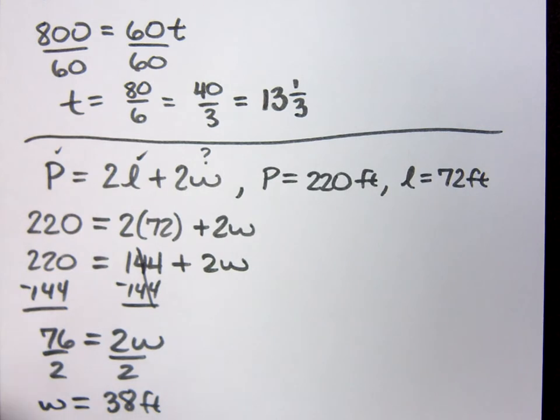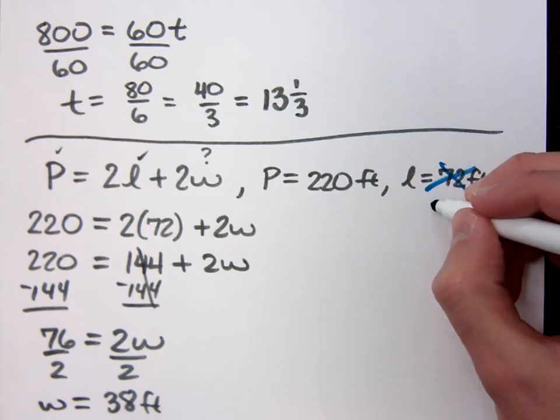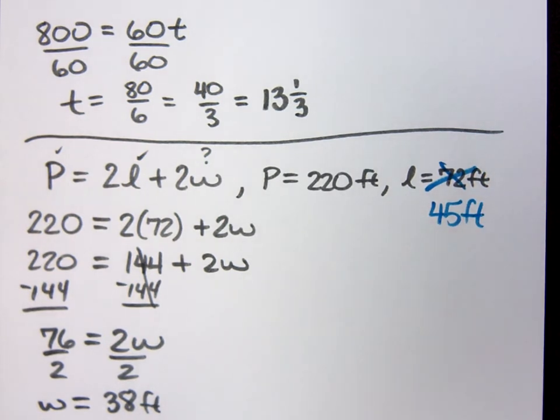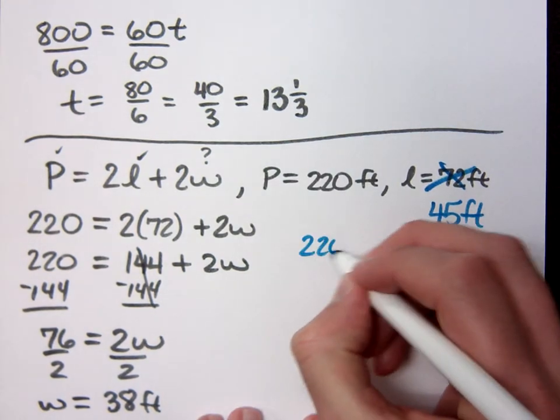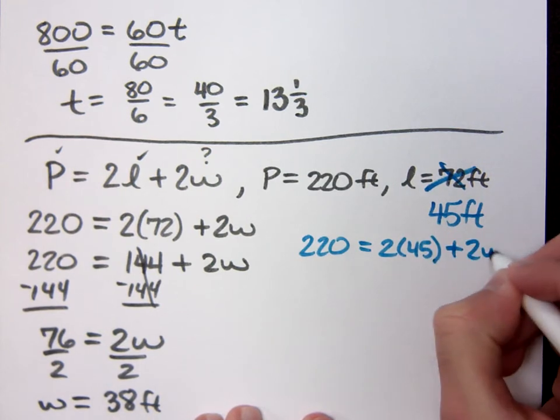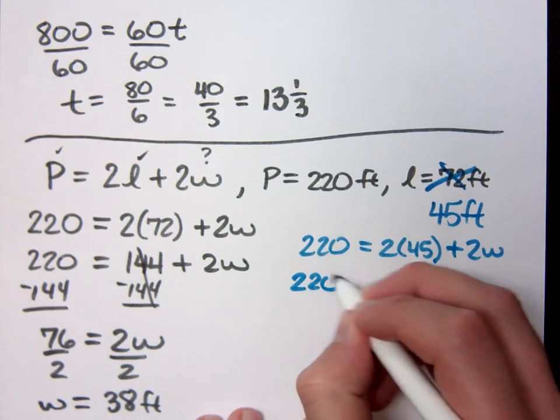But hold on a second then. Hey guys, I just came back and talked to my wife. She said 72 feet is too much. We've got to change that up. She doesn't matter. She said she wants it to be 45 feet. You guys don't mind doing a little bit of a different math, do you? Now we've got to go back and do everything again, right?